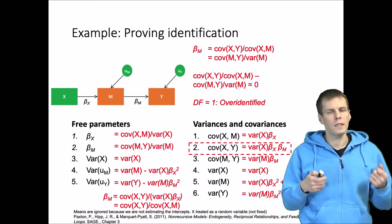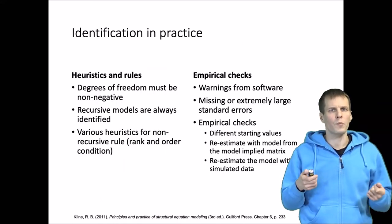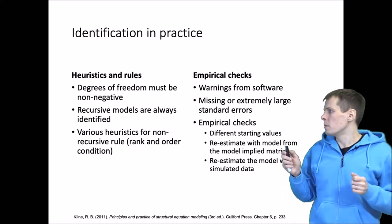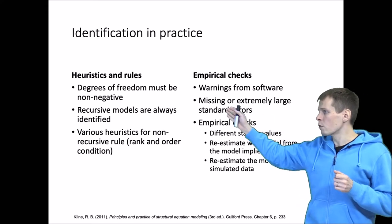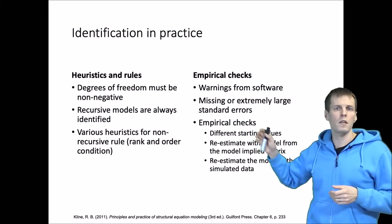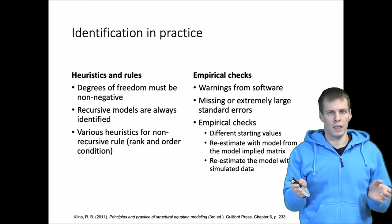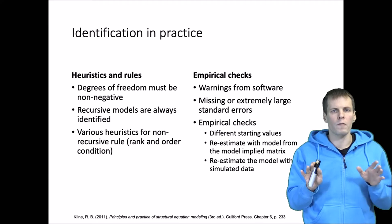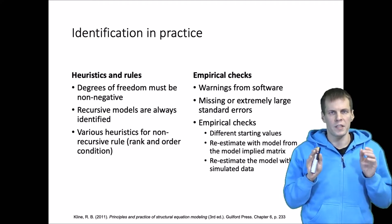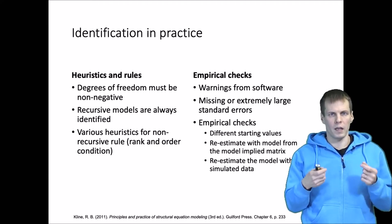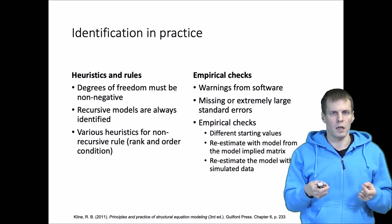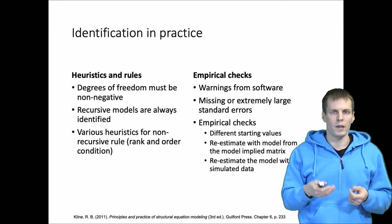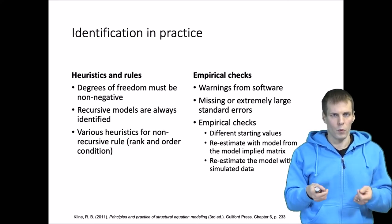In practice, this algorithmic proving approach is not a practical solution for establishing identification. But there are a couple of good rules of thumb and heuristics. First, if your degrees of freedom is negative, then the model is going to be unidentified no matter what. Estimating models with negative degrees of freedom is not a good idea, because a beginner would not have an easy way of knowing which parameters are identified and which are not.